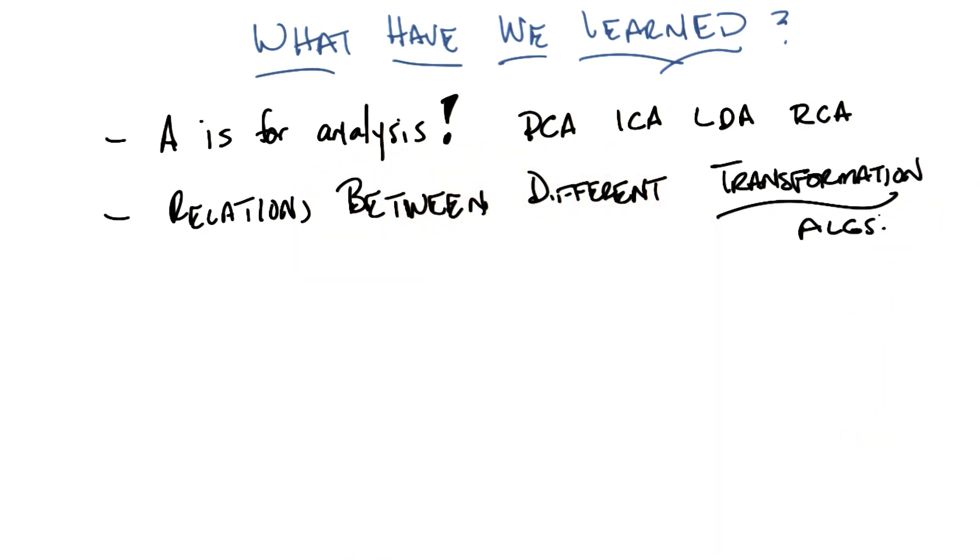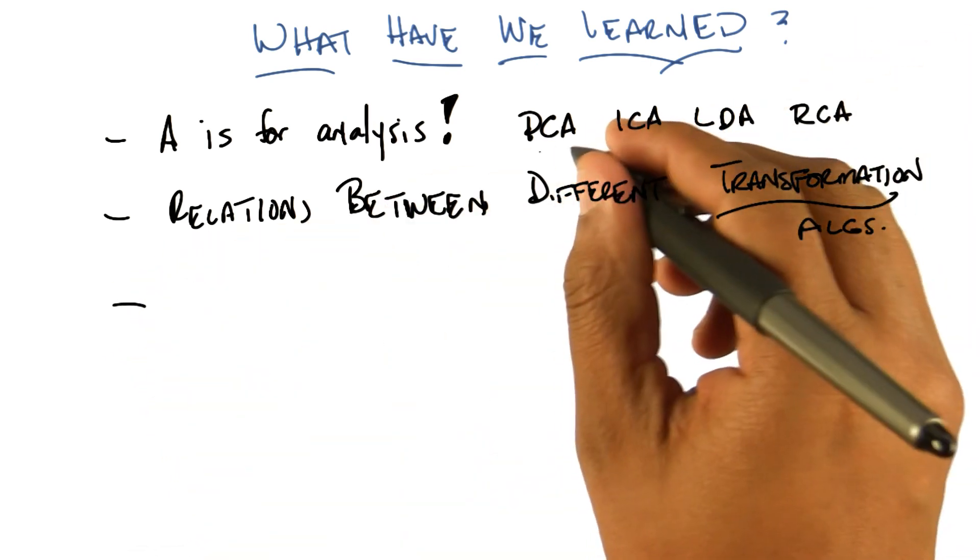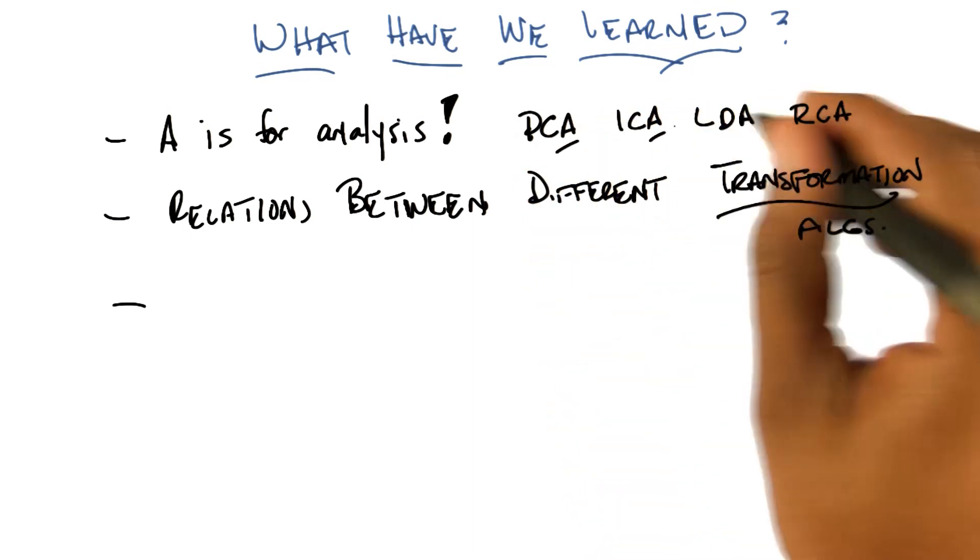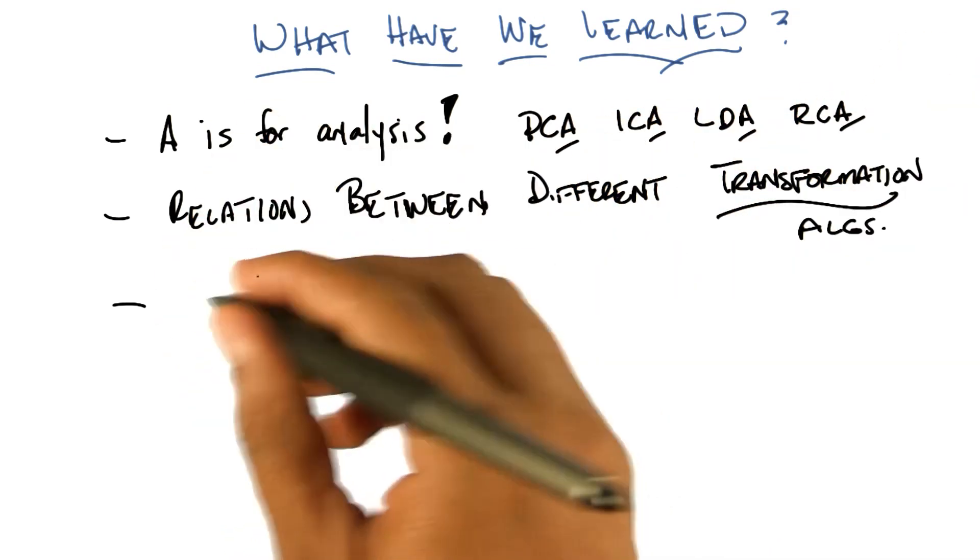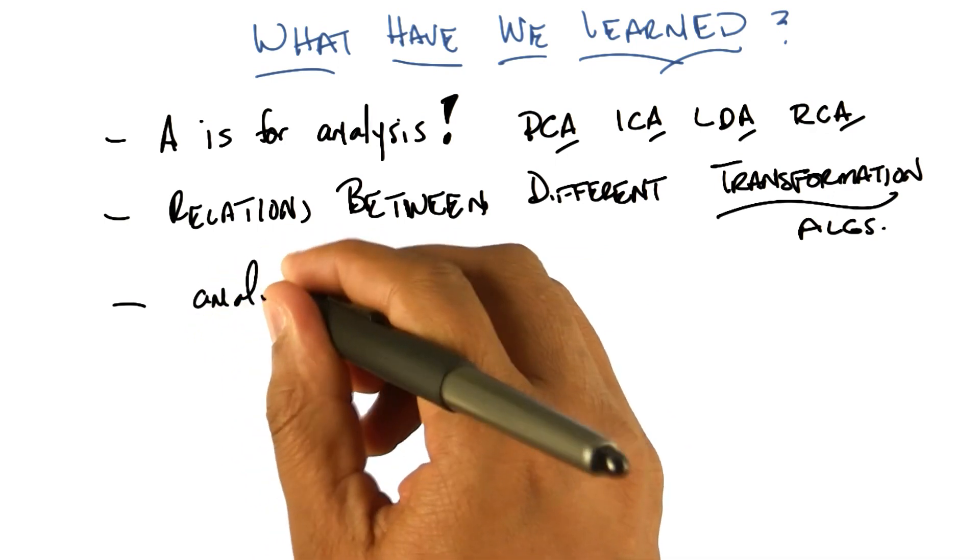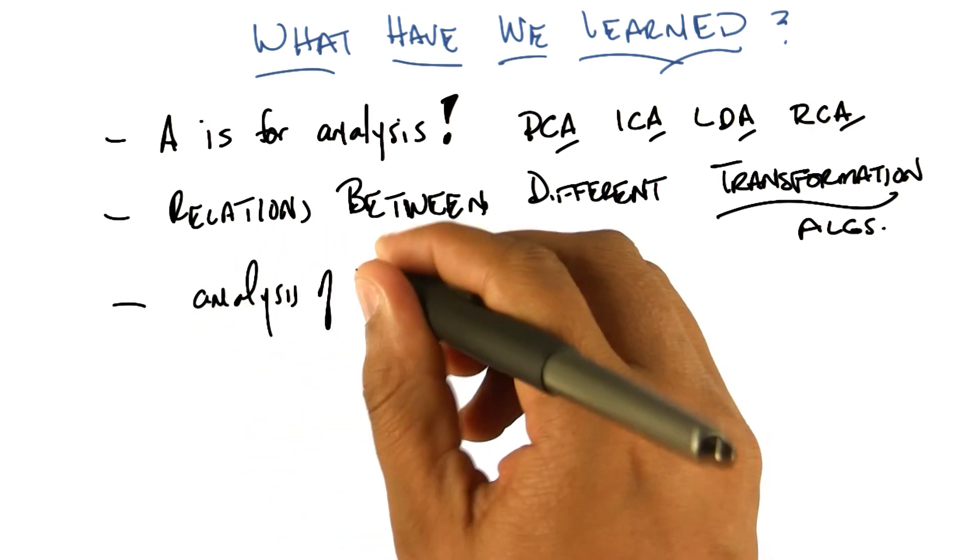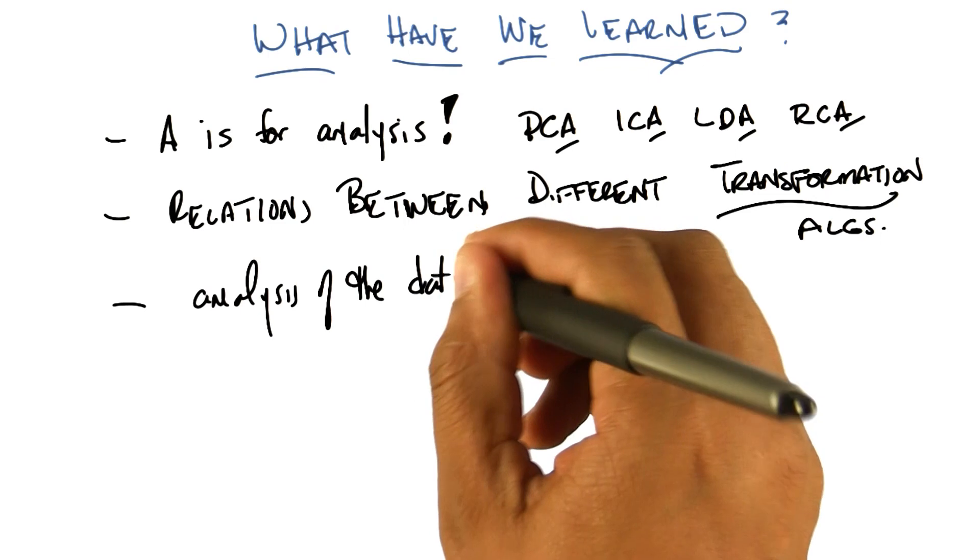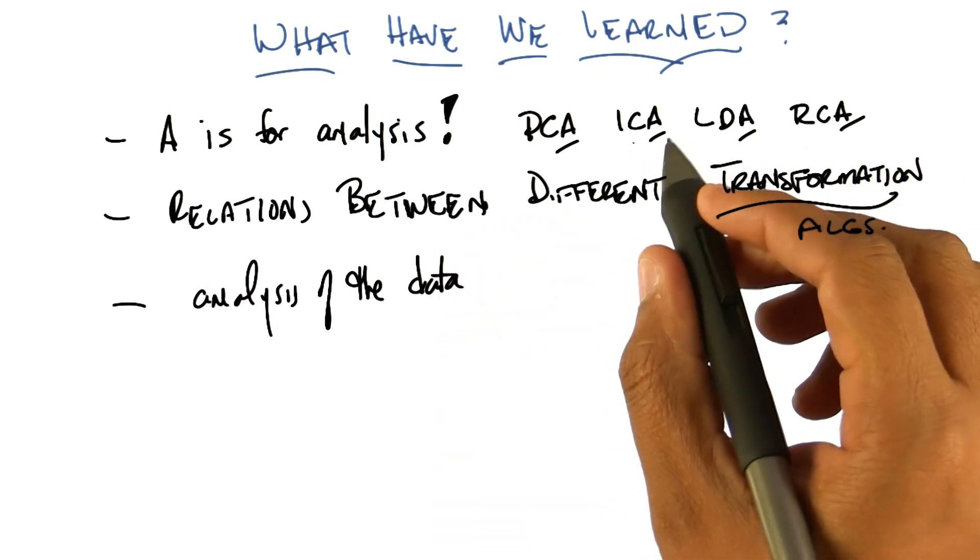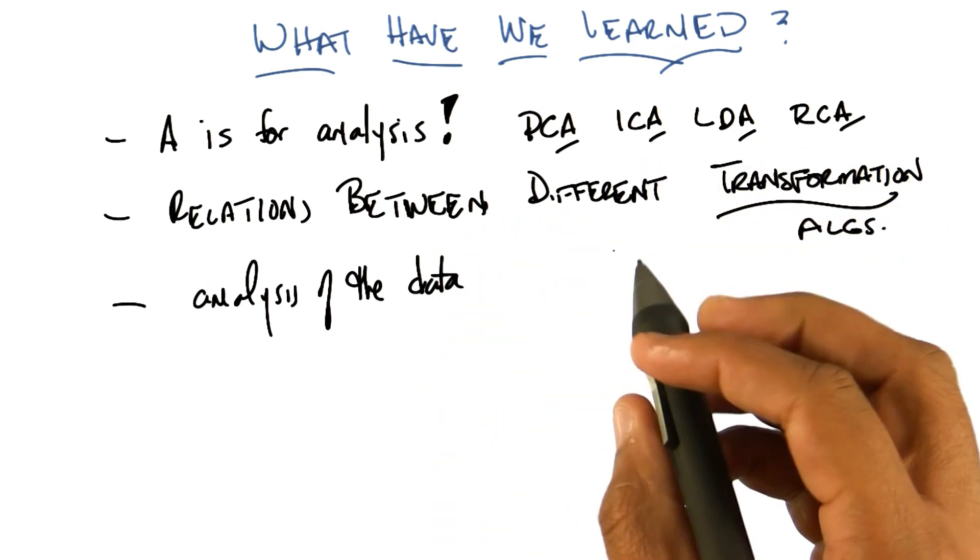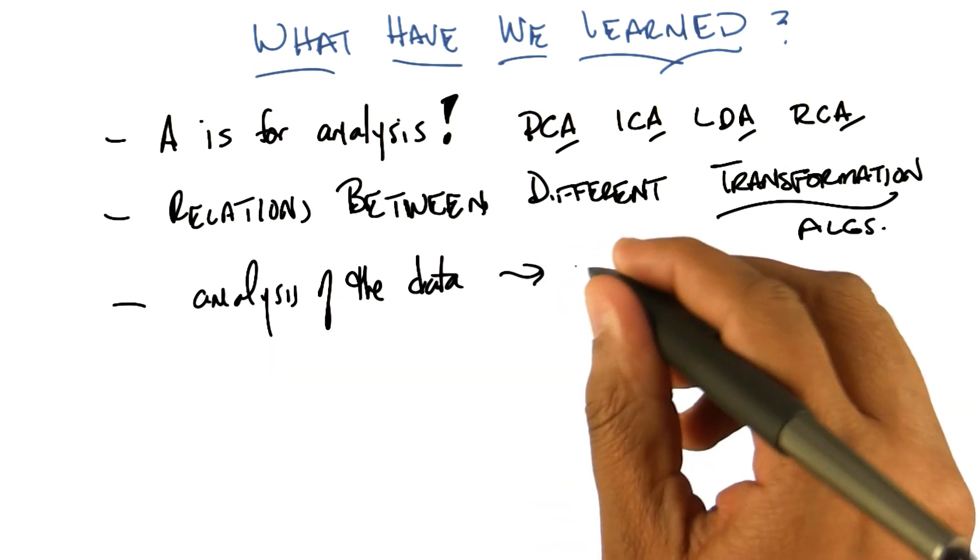That's right. Okay, so we found the relationships between different transformation analysis. Oh, here's something we learned. We learned that the A doesn't just stand for analysis in the algorithms, but it actually does stand for analysis of the data. Because that's unsupervised learning. And in particular, ICA tells you what the underlying structure of the data is. You can use it to find structure.